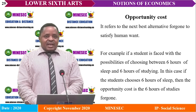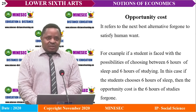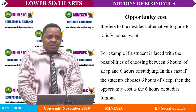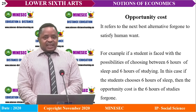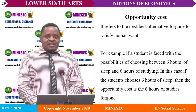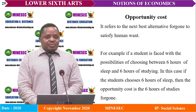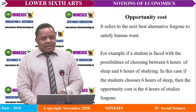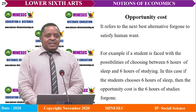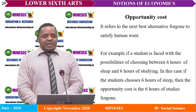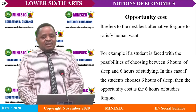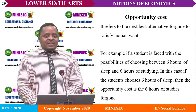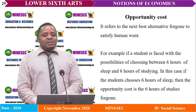We look at opportunity cost. It refers to the next best alternative foregone to satisfy human wants. It is also known as true cost or real cost. It comes as a result of the fact that people cannot satisfy all their wants since resources are scarce, and therefore must choose between one thing and another, so that the satisfaction of one implies sacrificing the other. For example, if a student chooses six hours of sleep over six hours of studying, the opportunity cost of the six hours of sleep is the six hours of studies foregone.